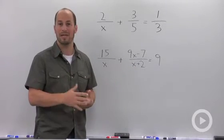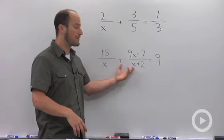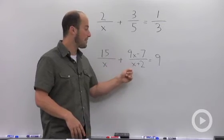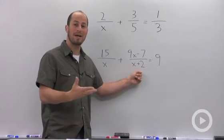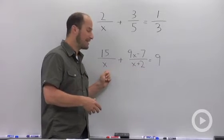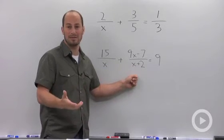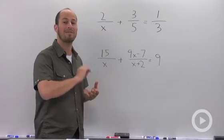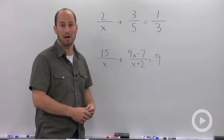Remember we have a fraction, we can't divide by zero. So in this particular case, I have a denominator of X and a denominator of X plus 2, so right from the get-go I know that I cannot get 0 or negative 2 as an answer. If I got those as an answer, I would have to throw them out because they're not in the domain of this particular problem.